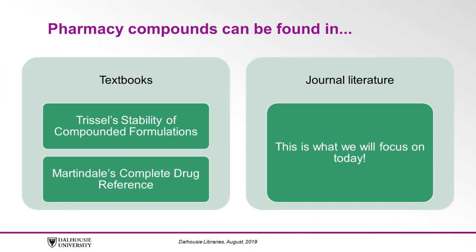Pharmacy compounds can be found in various places, including textbooks such as Trissel's Stability of Compounded Formulations and Martindale's Complete Drug Reference. This tutorial will focus on finding information in the journal literature.